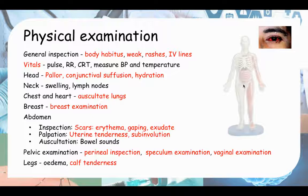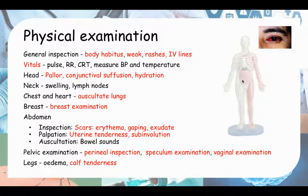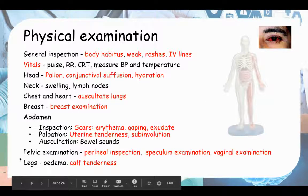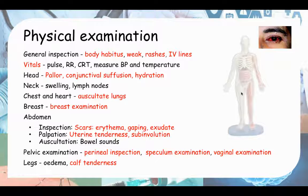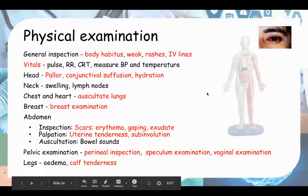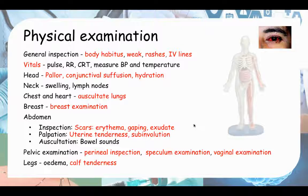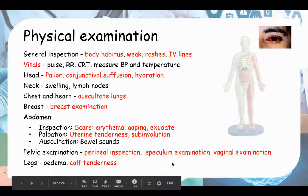Then move to the abdomen. First inspect for any scars — was there a C-section scar that might be infected? Is there any erythema, gaping, or exudate from the scar? On palpation, check for uterine tenderness in the suprapubic region. Does the uterus feel soft or firm? Is there any sub-involution — you shouldn't be able to feel it by 10 days postpartum, but if you can, that's likely sub-involution. Auscultate for bowel sounds. For pelvic examination: if there was an episiotomy and it's painful, do a perineal inspection for erythema, swelling, or discharge. If it's internal, you may need a speculum examination to assess for foul-smelling vaginal discharge.